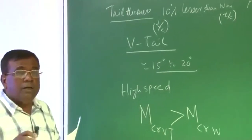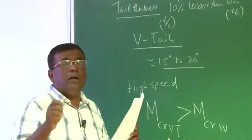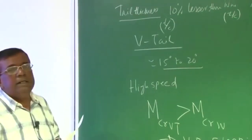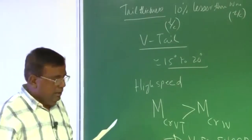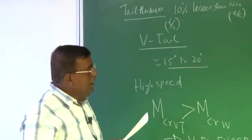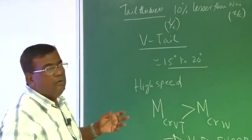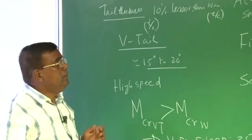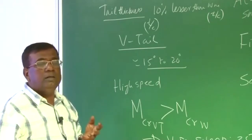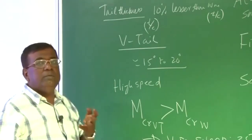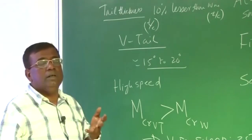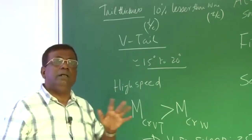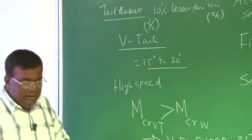This is guided by the understanding that we want M-critical of the horizontal tail to be more than M-critical of the wing. We know that if we make the aerofoil thicker and thicker, M-critical will reduce. So all those things converge here and I wanted to share these numbers with you.